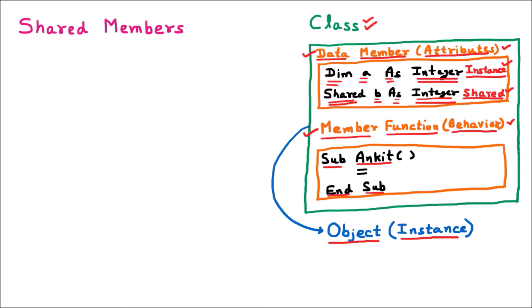Now let's discuss the difference between instance variables and shared variables. Suppose we have created two objects of the class: obj1 and obj2. For instance variables, when we create multiple objects, they may have different values. For example, instance variable 'a' can have different values for different objects — for obj1 the value might be 10, and for obj2 the value might be 20. So accessing through different objects gives different values, which is possible with instance variables.